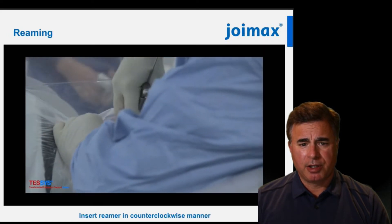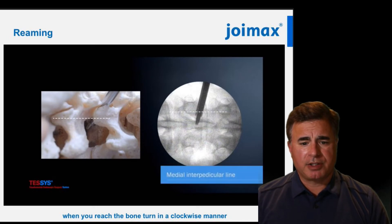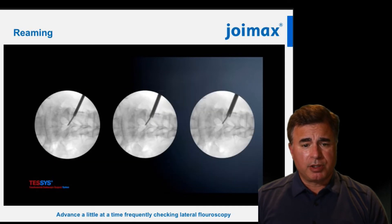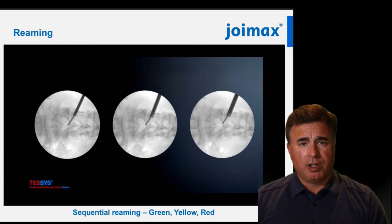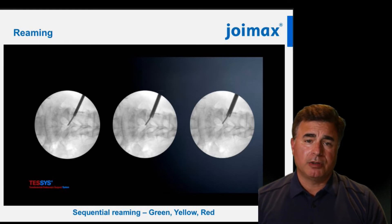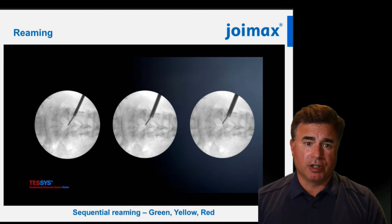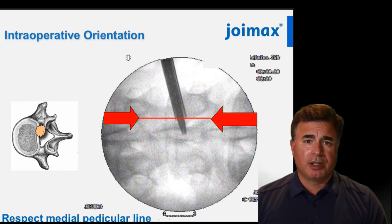Next, insert the crown reamer in a counterclockwise manner to avoid injuring the soft tissues. When you reach the bone, turn your reamer in a clockwise fashion and advance a little at a time, frequently checking fluoroscopy. The goal is not to go beyond the medial border of the pedicle — if you do, you run the risk of injuring the dura. The dura never goes more lateral than the medial pedicular line, so if you don't go beyond that line you will not injure the dura. This is why it's so important to have good imaging so you can define your medial pedicular line.